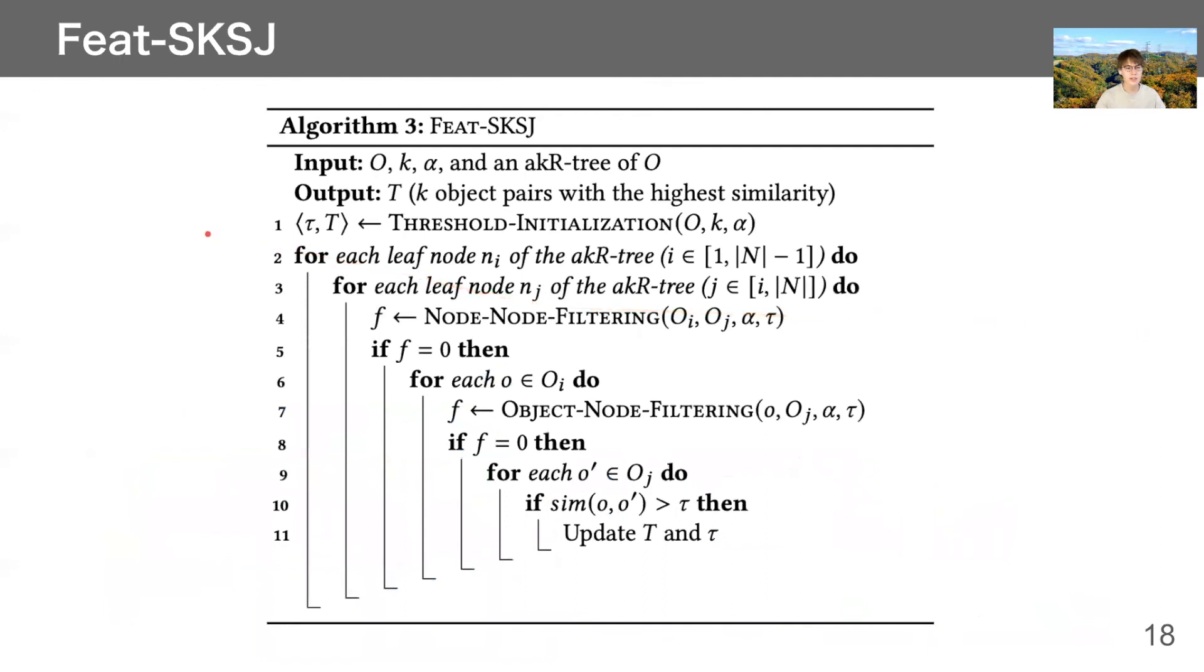Here is our entire algorithm. First, we do threshold initialization. Second, for each leaf node, we do node-node filtering. If we cannot prune pairs by node-node filtering, we do object-node filtering. After filtering, we calculate similarity of remaining pairs and update answer.